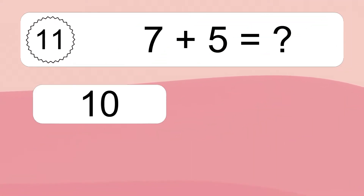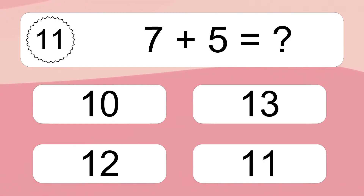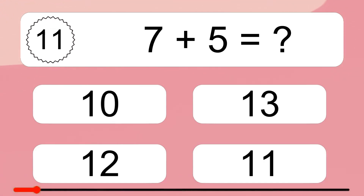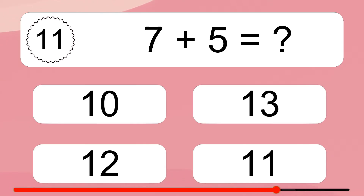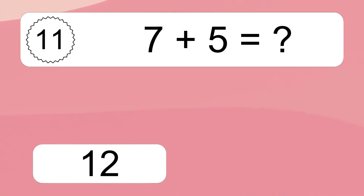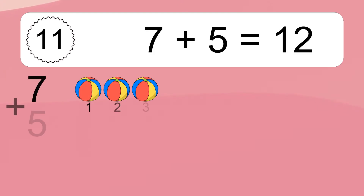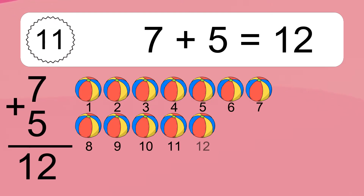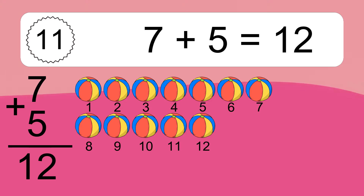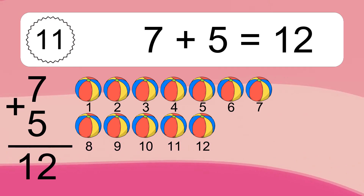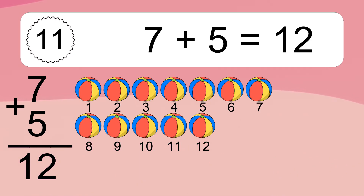7 plus 5 equals what? 7 plus 5 equals 12. Let's count it. 1, 2, 3, 4, 5, 6, 7, 8, 9, 10, 11, 12.